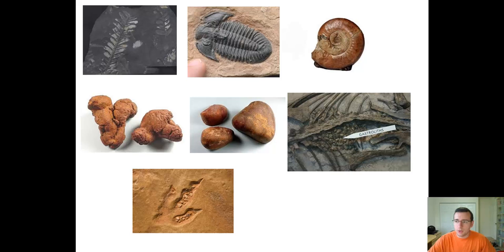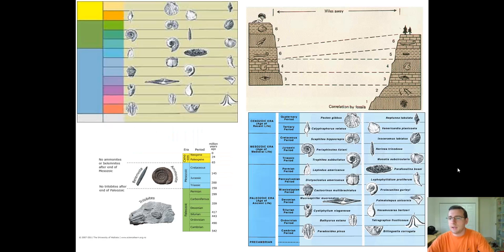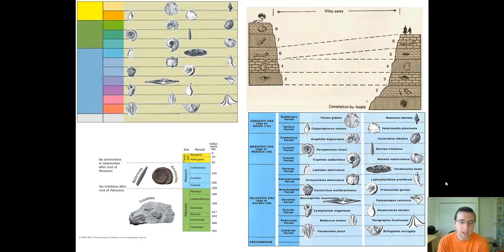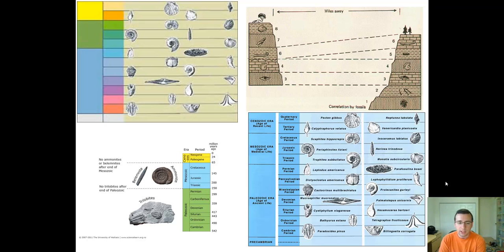Why are fossils so important for studying the history of life? Because they can tell us about the progression of life and how life has changed over time. One special type of fossil is called an index fossil. Index fossils are fossils that only exist up to a certain point or only during a certain era of Earth's history, like the ones shown in the pictures. Their presence in a rock can be used to help date that rock.